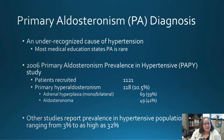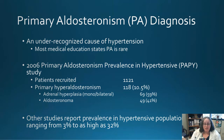In 2006, the Primary Aldosteronism Prevalence in Hypertensives (PAPY) study recruited over 1,100 patients and identified that 118 of those hypertensive patients had primary aldosteronism — that's 10.5%. When you extrapolate that to the general population, that is an insane amount of patients. There were limitations — it was only 1,121 patients — but it still represents a large number of people.